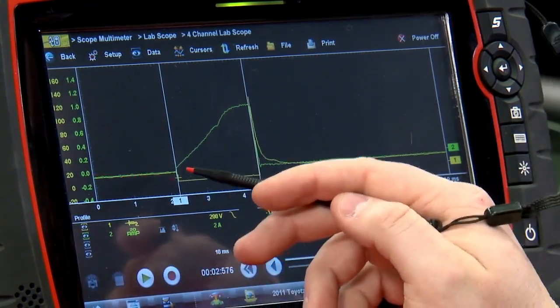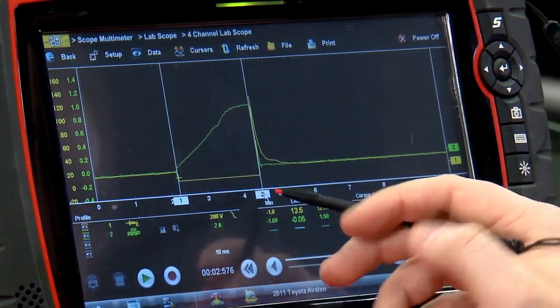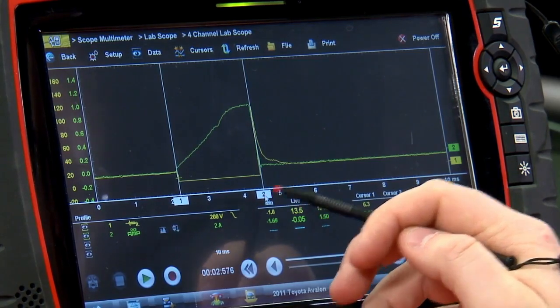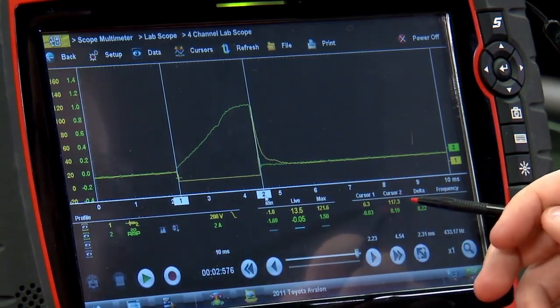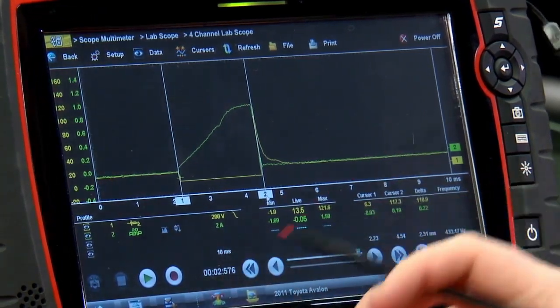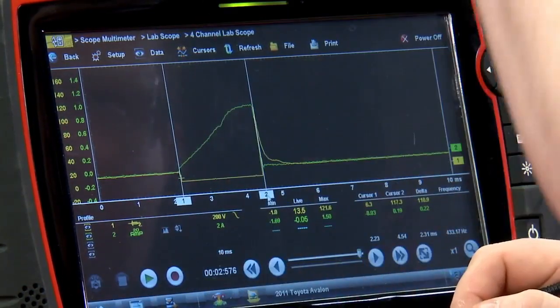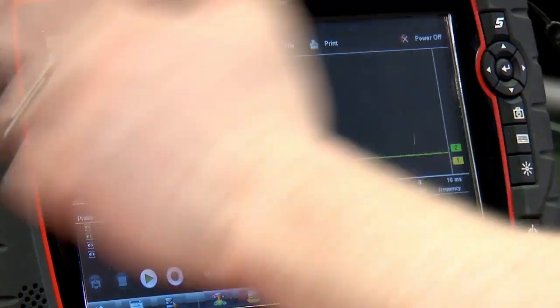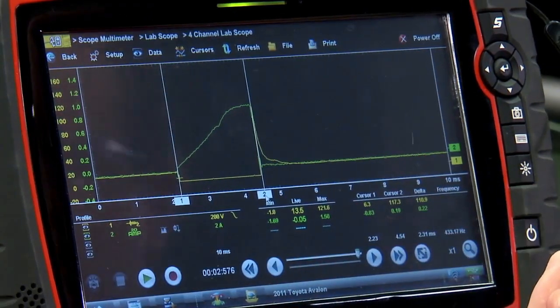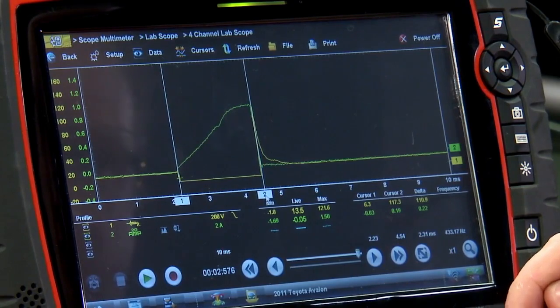So alternator voltage comes in, PCM grounds it for a set amount of time, the pulse width. If I take cursor two and move it over, that's all of that voltage that was just stored inside of that fuel injector. And once it releases the ground, all that voltage goes back into the line. We're looking at 117.3 volts in this case.